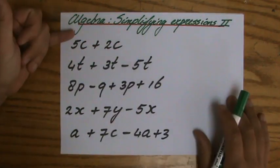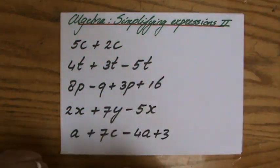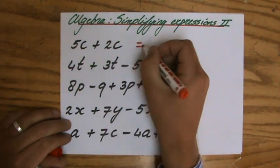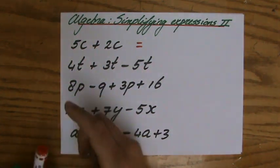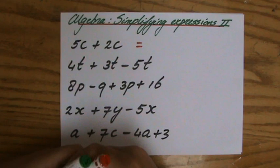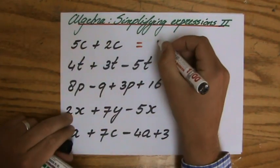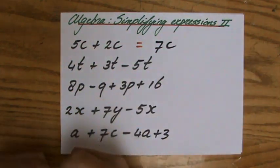If I look at my first example question, 5C plus 2C, are there like terms? Yes, there are. 5 cups plus 2 cups, how many cups do I have? I will have 7 cups. So the answer to that would be 7C.